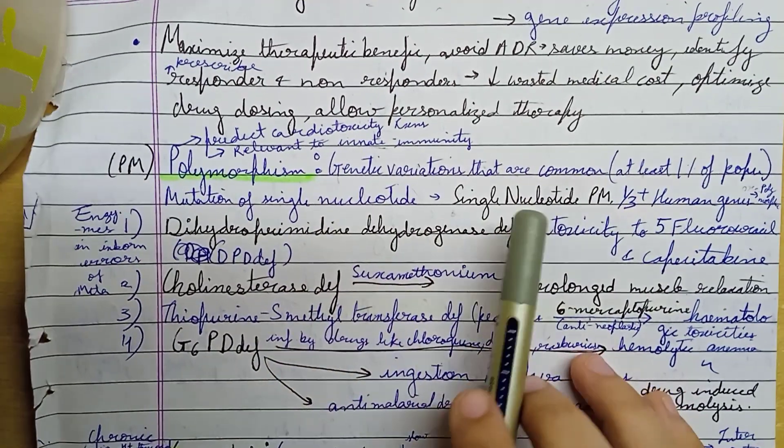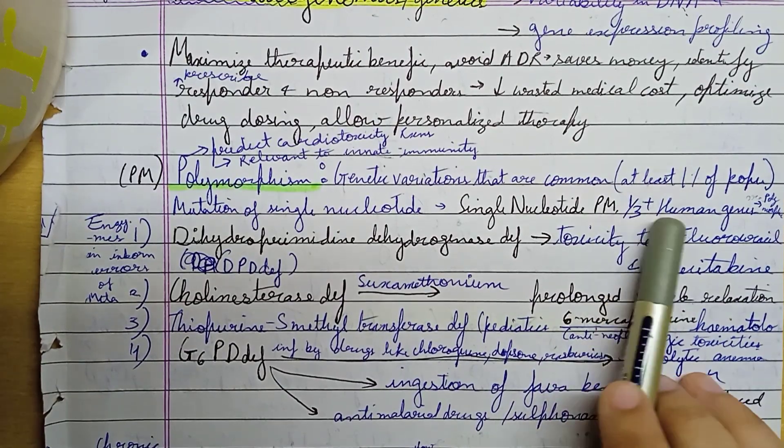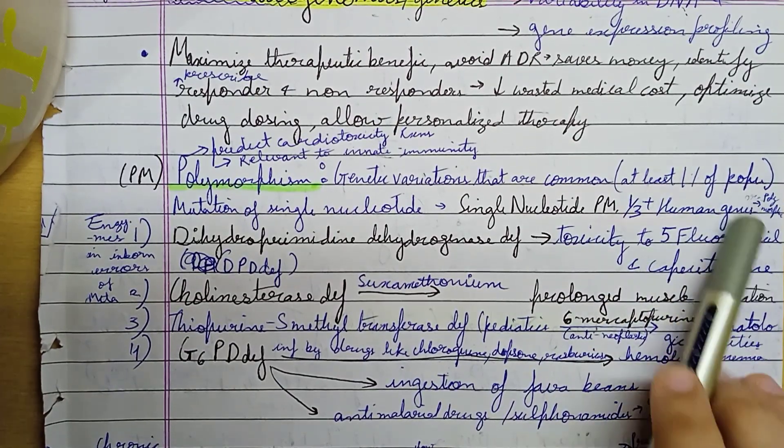This is called single nucleotide polymorphism. A third of human genes are polymorphic.